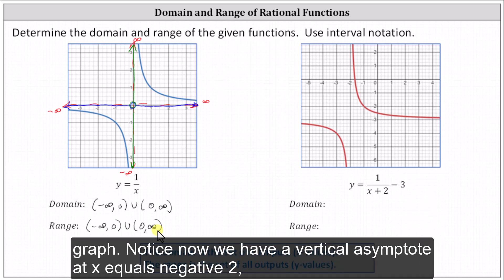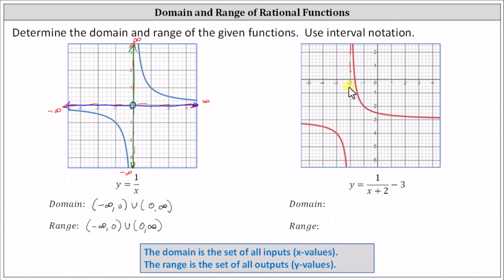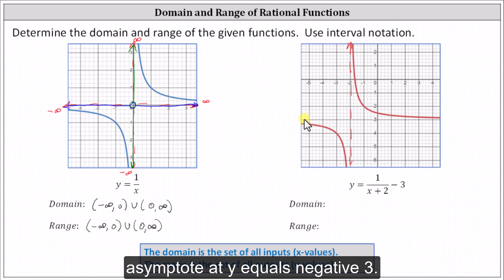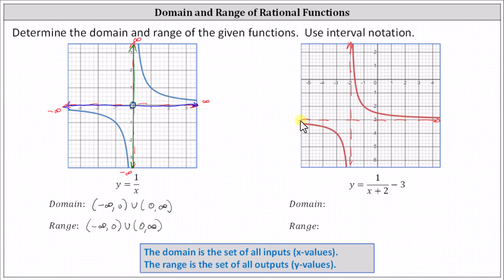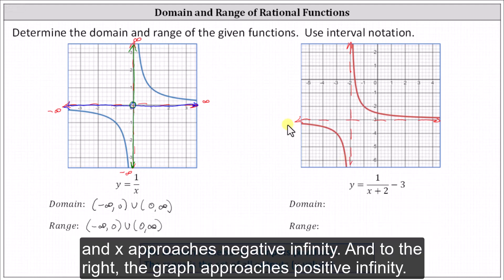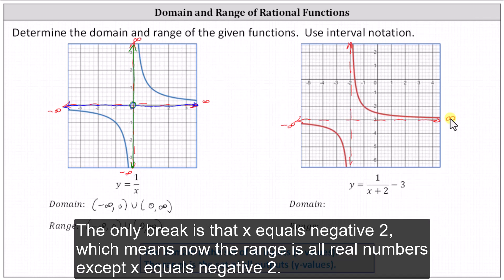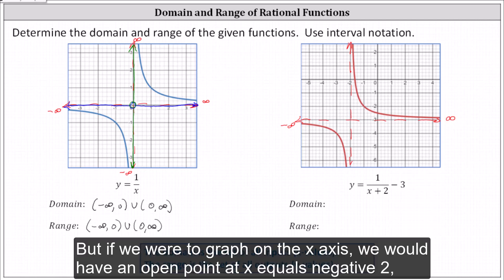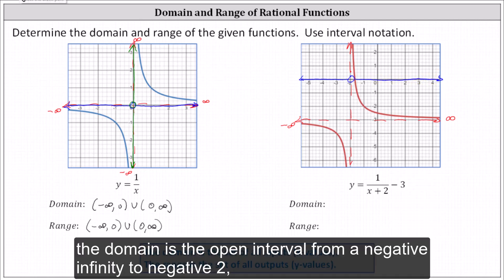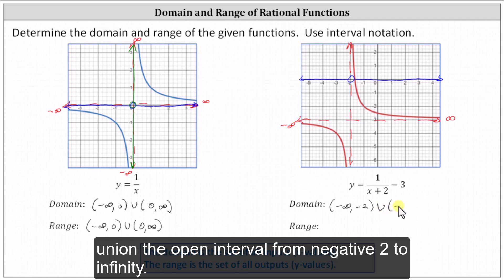Now let's take a look at the second graph. Notice we have a vertical asymptote at x equals negative two, which is where we have division by zero, and there's also a horizontal asymptote at y equals negative three. To determine the domain, we analyze the graph from left to right. Notice the graph moves to the left indefinitely and x approaches negative infinity, and to the right the graph approaches positive infinity. The only break is at x equals negative two, which means the domain is all real numbers except x equals negative two. If we were to graph on the x-axis, we'd have an open point at x equals negative two, an arrow to the left, and an arrow to the right. Using interval notation, the domain is the open interval from negative infinity to negative two, union the open interval from negative two to infinity.